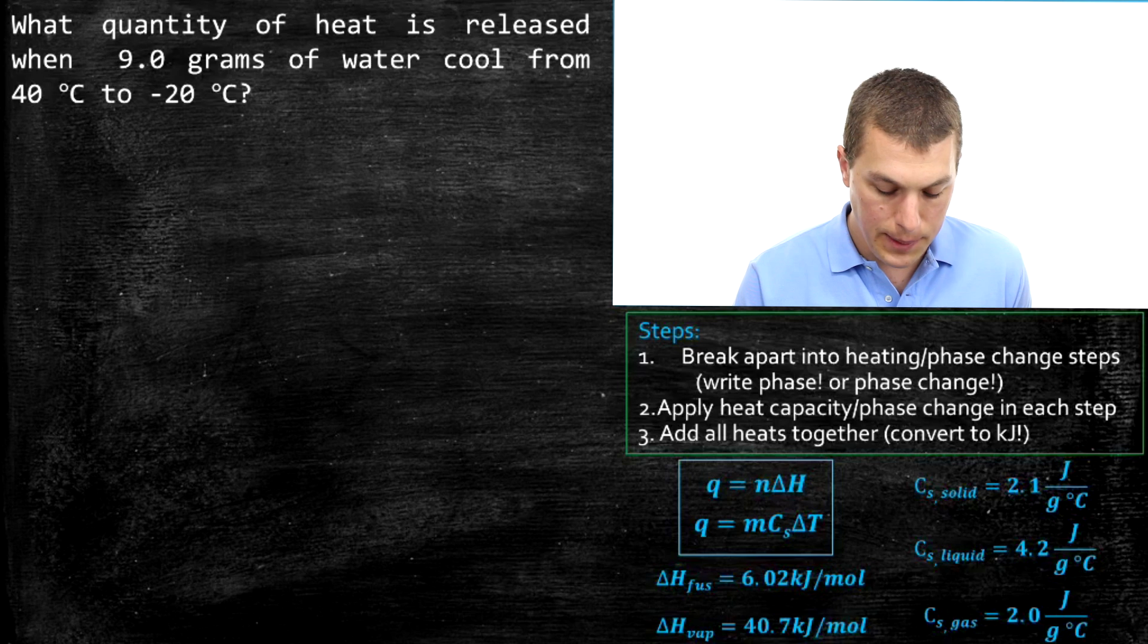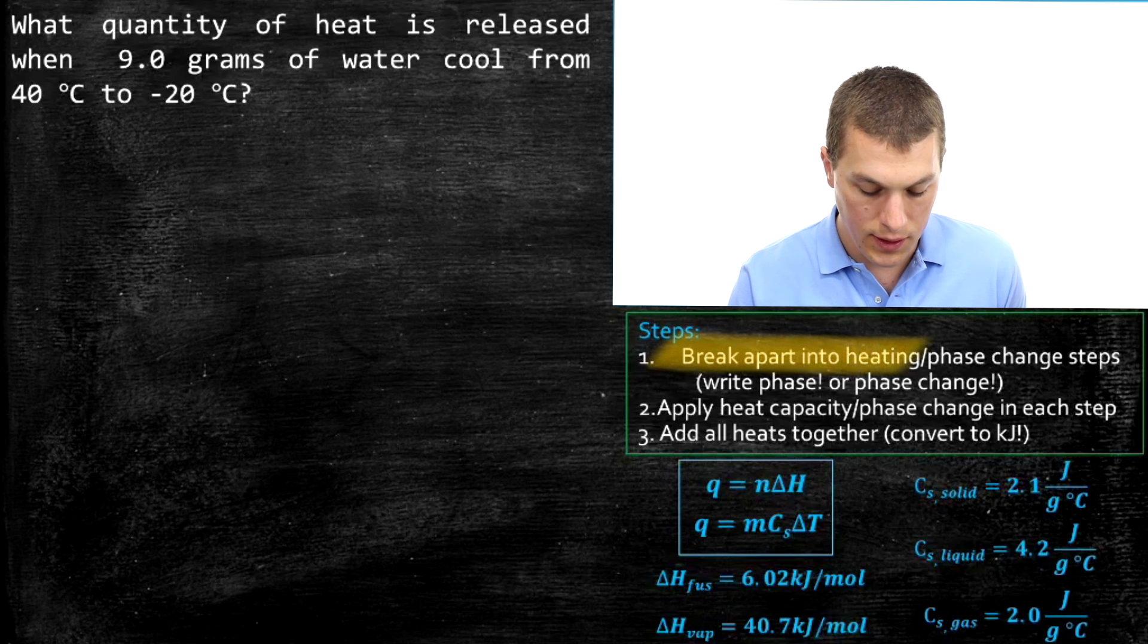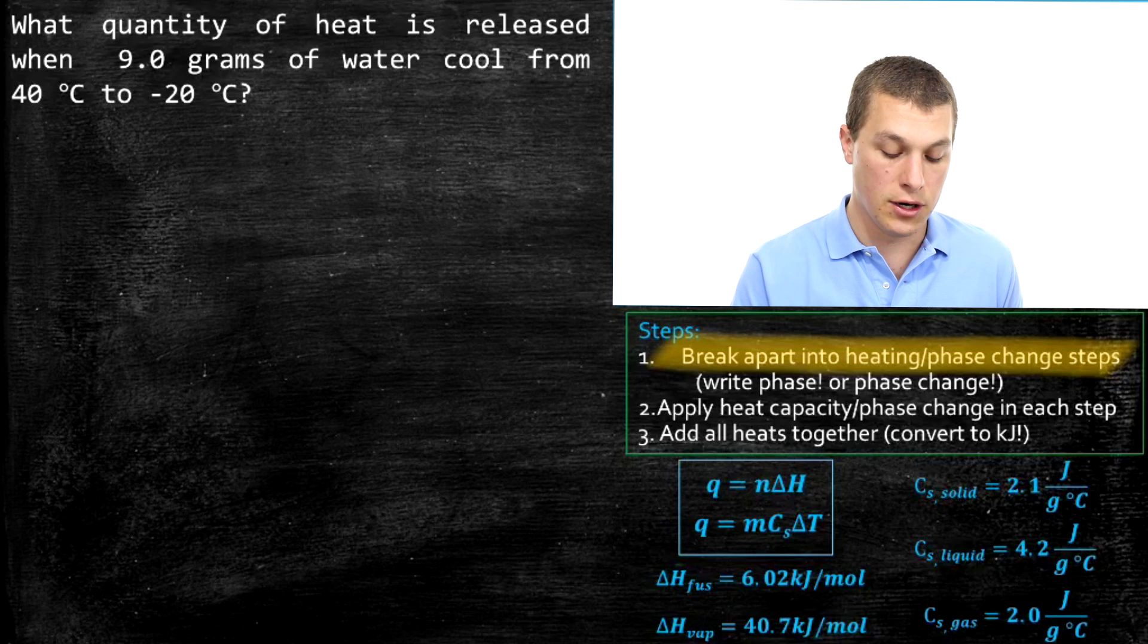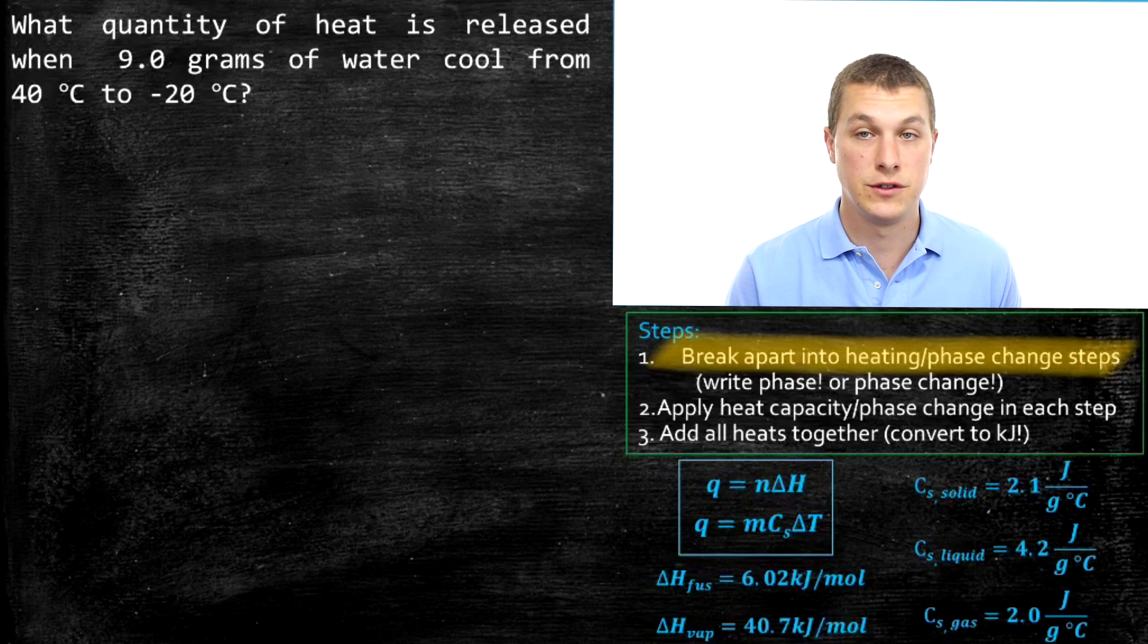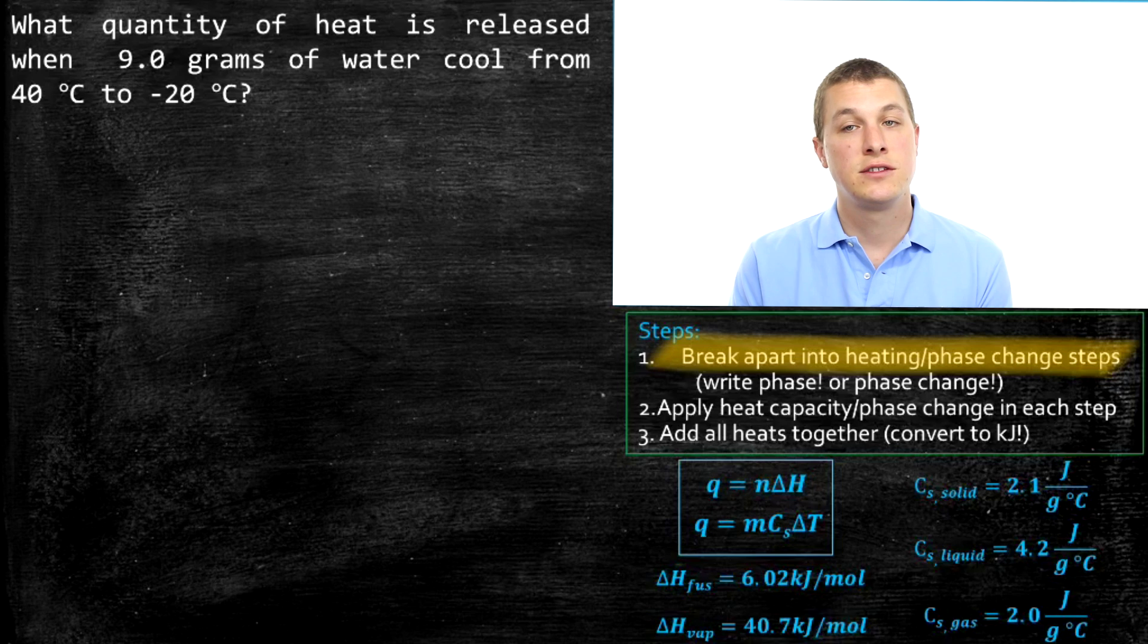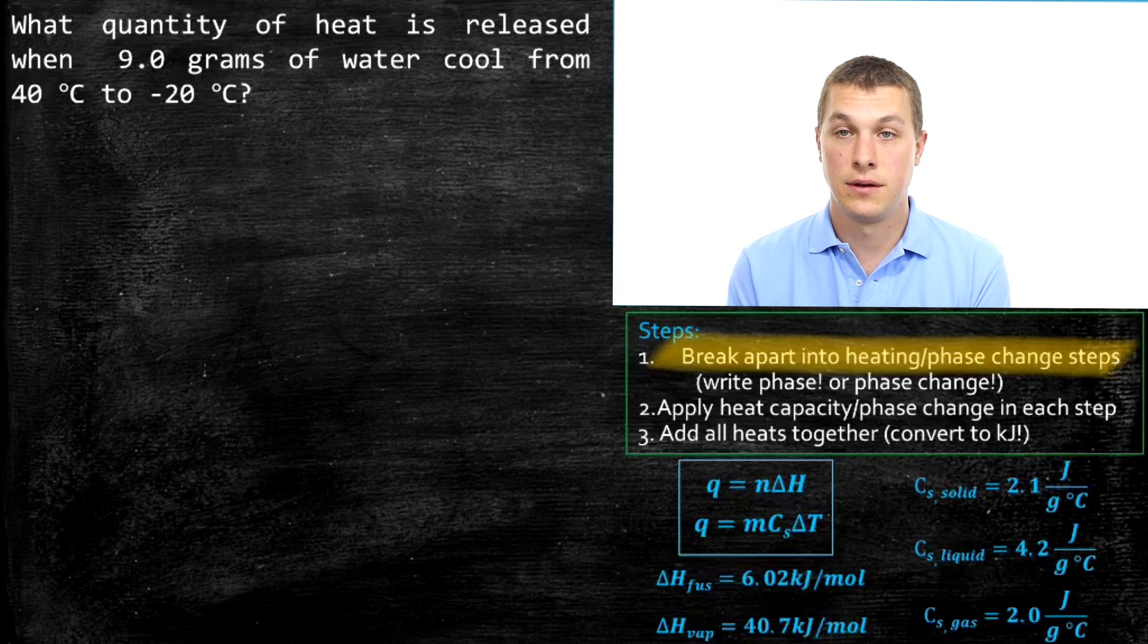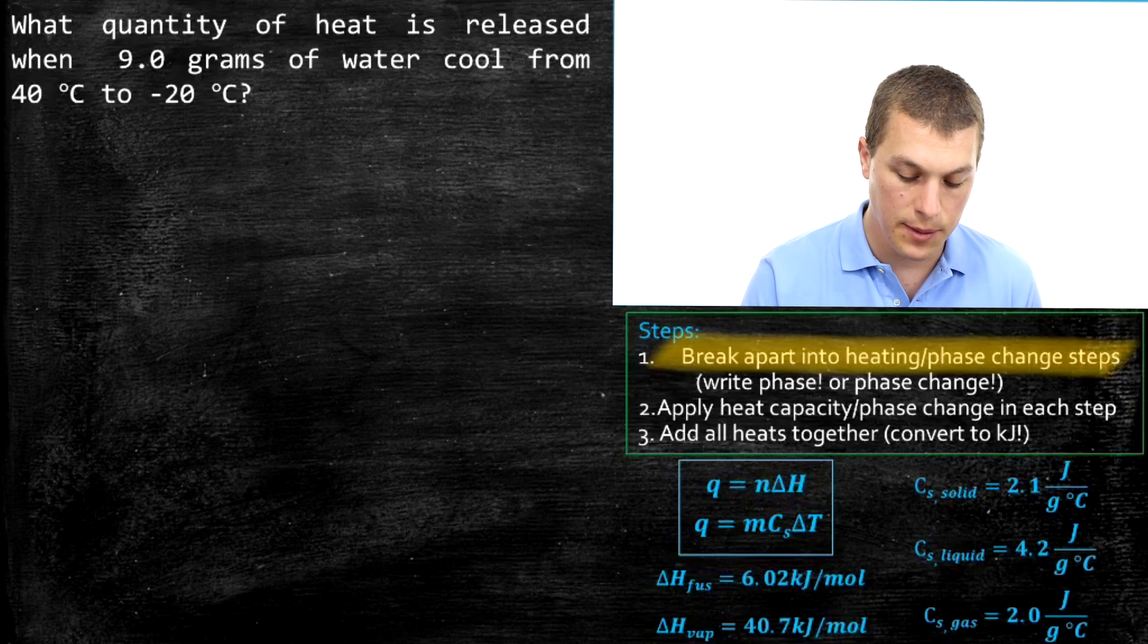Step one says break apart into the heating phases and the phase change steps. There's two different types of calculations we're going to do. One is when we're cooling water from 40 degrees to zero degrees, that's a heat capacity problem. On the other hand, once we get to zero degrees Celsius, that's now a phase change problem, because at zero degrees Celsius water freezes. Finally, when we cool ice from zero degrees to minus 20 degrees Celsius, we're once again dealing with a heat capacity calculation. So we've got to break this up into three steps.